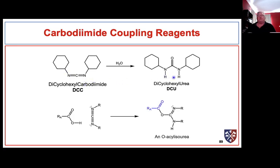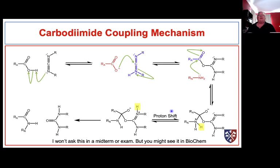DCC picks up two protons and an oxygen atom — the elements of water. Why these reagents work so well is that DCC is very soluble in a solvent like dichloromethane, but the byproduct dicyclohexylurea is not. So it provides a mechanism where our reagents and our amide product are soluble in the solvent, but the dicyclohexylurea precipitates out of solution. The first step of the reaction forms an O-acyl isourea intermediate, which has a very good leaving group.